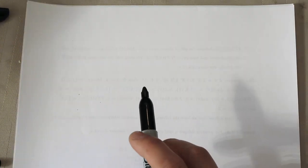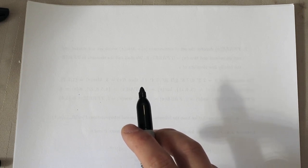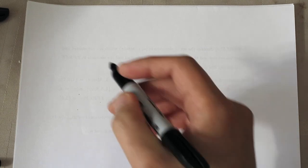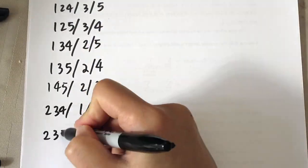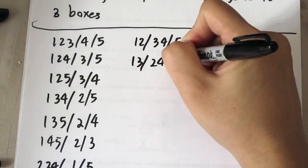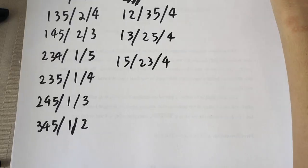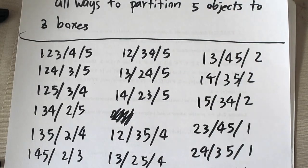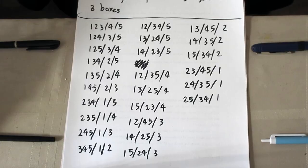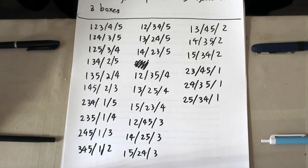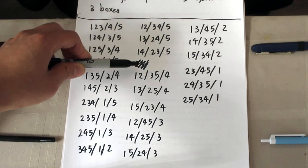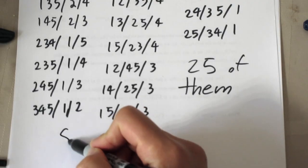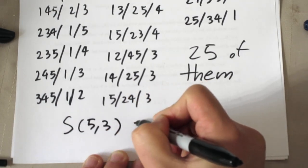With that in mind, we can count all possible ways to partition five numbers into three boxes, and that count will be S(5,3). After listing and counting all of them, we get S(5,3) = 25.